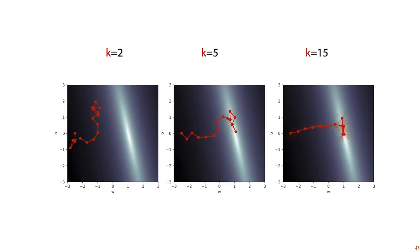If we sample just two points, we see roughly the same behavior as before. But if we sample five points, we see that the path the search algorithm takes towards the minimum is much more direct. And if we take 15 samples every step, the search algorithm travels towards the minimum in almost a straight line. The lesson here is that the better we know in which direction the loss decreases, the faster our search converges.